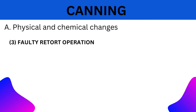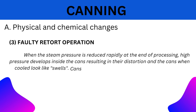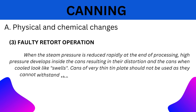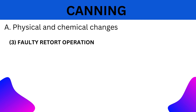6. Faulty Retort Operation: When the steam pressure is reduced rapidly at the end of processing, high pressure develops inside the cans, resulting in their distortion, and the cans, when cooled, look like swells. Cans of very thin plate should not be used as they cannot withstand the pressure which develops in the can while processing.